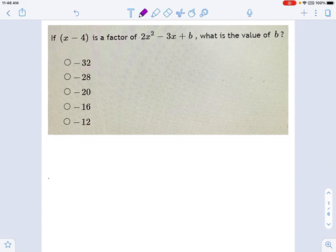The fastest way is to realize, if I were to rewrite this polynomial and set it equal to 0, and then factor it, I'm told that x minus 4 is a factor, so that means it must be possible to write this thing in the following form.